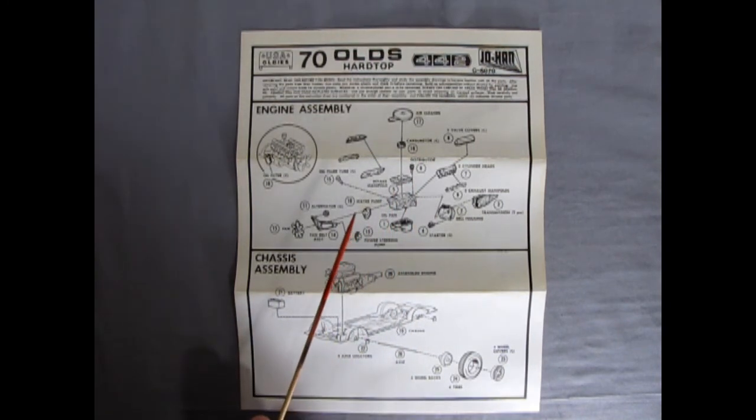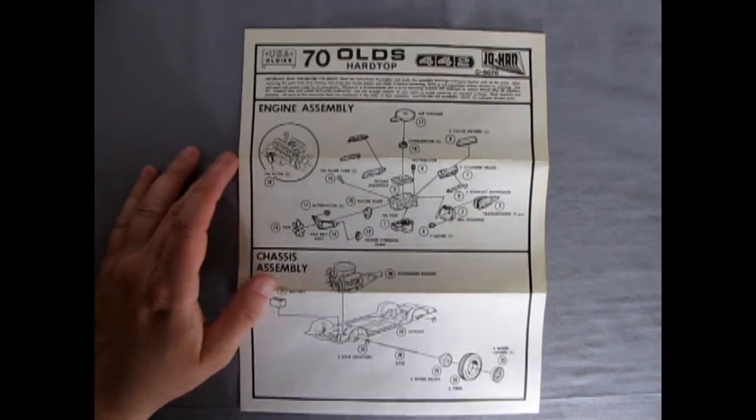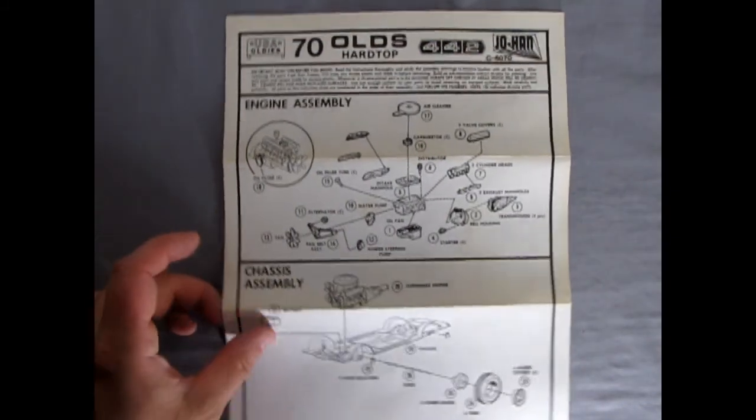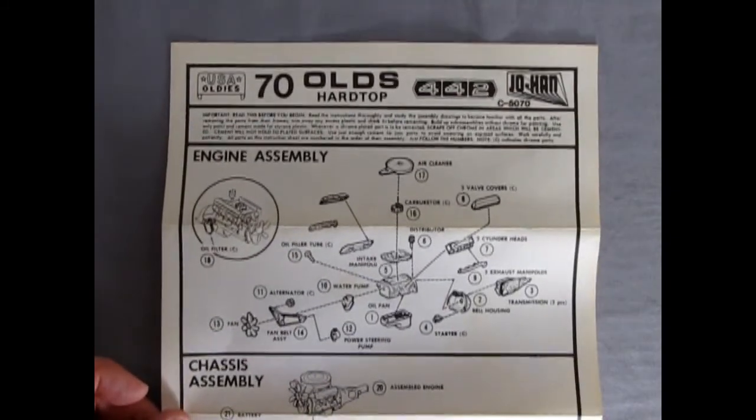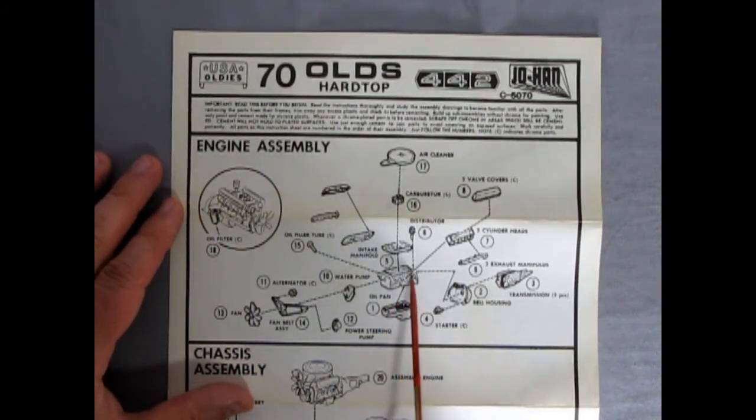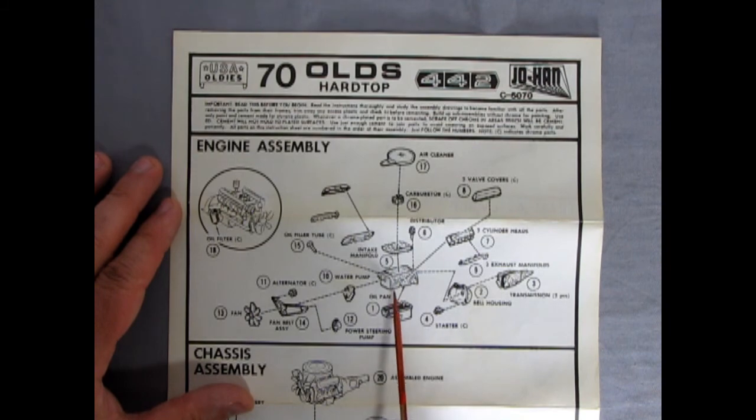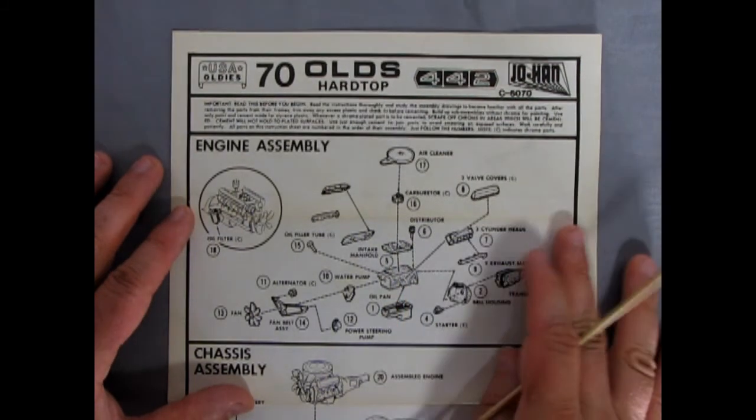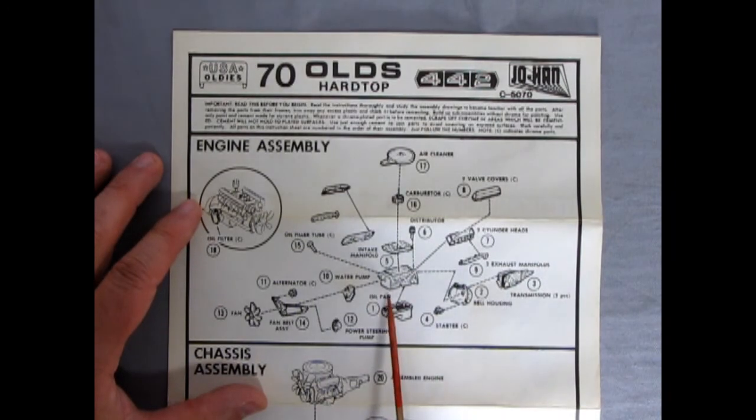A couple pieces later it all popped together. But if I zoom in on the engine for better clarity, you can see that the engine block is one block, sort of like the Revell style where you had the cylinder heads in the top, like what was done on the 1990s AMT offerings.